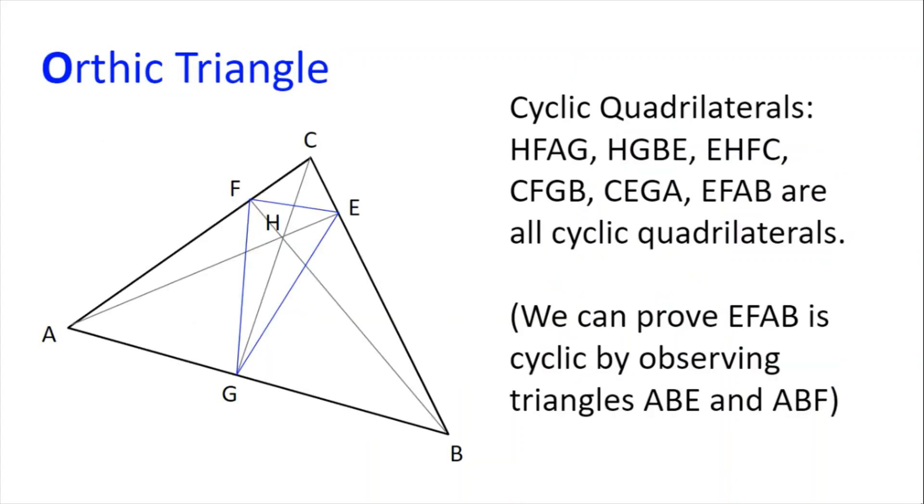Next, we have O for the orthic triangle. AEBF and CG are the altitudes of the triangle, so angle AEB is 90, BFA is 90, and CGB is 90, H is the orthocentre, and EFG is the orthic triangle.